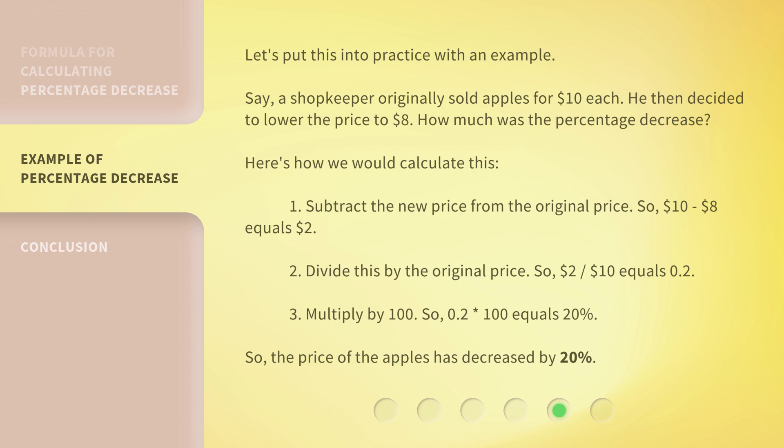3. Multiply by 100. So, 0.2 times 100 equals 20%. So, the price of the apples has decreased by 20%.